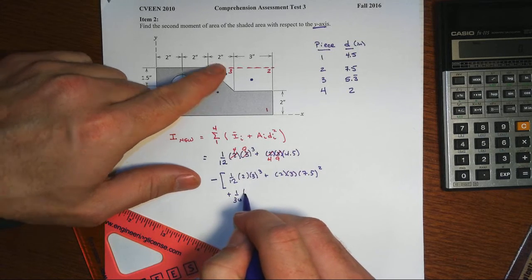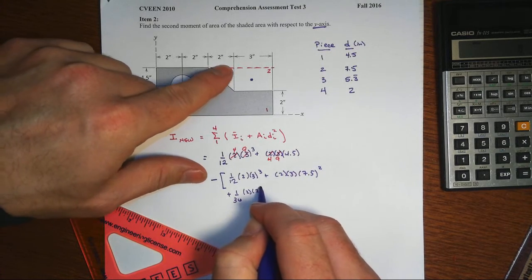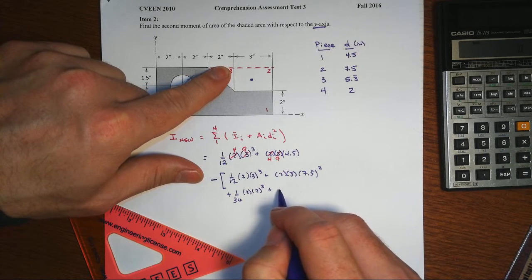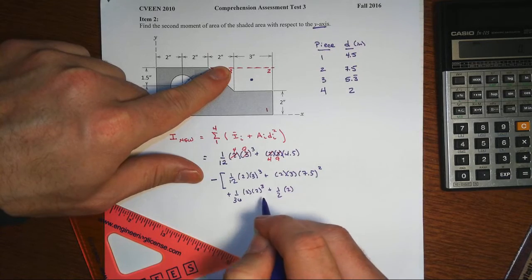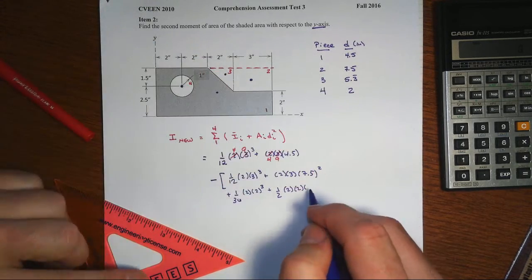That's 1/36 of the base of 2 times the height cubed, plus then its area, 1/2 of 2 times 2 times the distance it's moved, 5.33 squared.